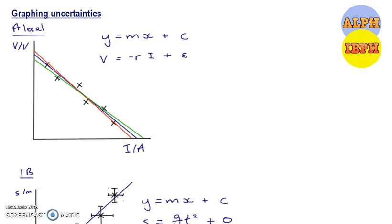You'll have drawn a graph which looks like this, and you'll have found the gradient to find minus r, the internal resistance, and you'll have found the y-intercept in order to find epsilon, which is the EMF.